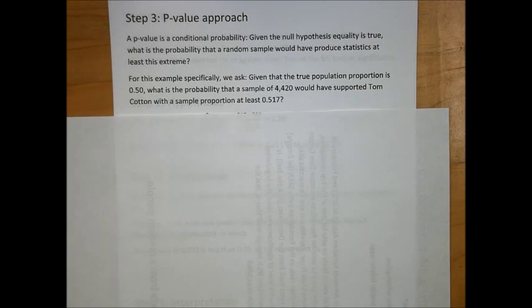A p-value is a conditional probability. Given the null hypothesis equality is true, what is the probability that a random sample would have produced statistics at least this extreme?